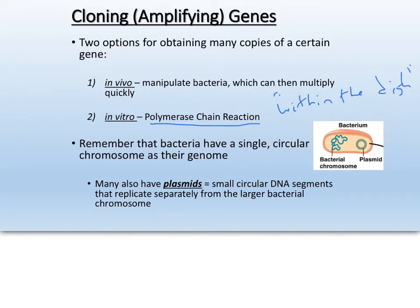You're probably familiar with the term in vitro, which applies to anything that happens in a lab without a living cell. In our society it's often referred to in cases of in vitro fertilization — taking an egg cell and sperm cell and putting them together in a lab dish versus inside a person. For in vivo cloning we need living bacteria. You might remember from our bacterial transformation talk that bacteria have a single circular chromosome as their basic genome, and they also have plasmids — small circular DNA segments that can replicate separately.